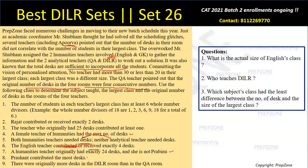Hint eight: Prashant contributed the maximum desks. This means Prashant teaches either QA or DLR, since analytical teachers are the ones with surplus desks who can contribute.